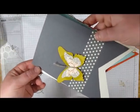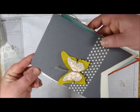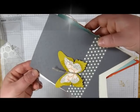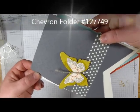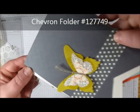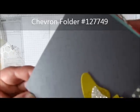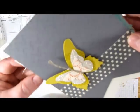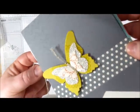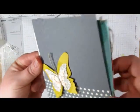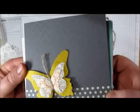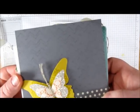Here's an example we made at convention last year using the chevron folder and Versamark ink for a more subtle look. And we just applied the Versamark straight to the embossing folder and then stamped it onto the card stock.